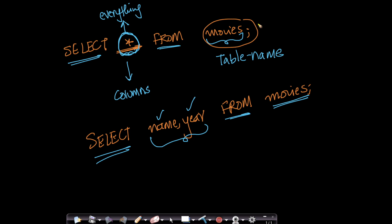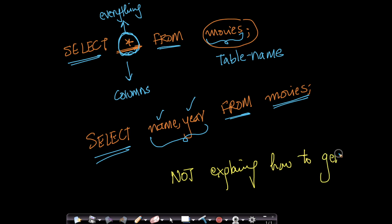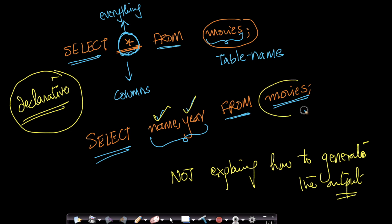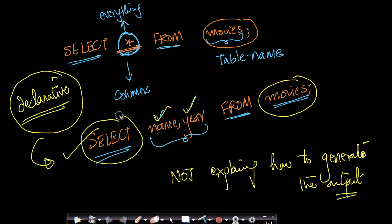One important thing to notice: we are not saying how to print it. We are not explaining how to generate the output. SQL is a declarative programming language — it's not procedural. Here you just say what you want. You're saying I want the columns name and year from this table. It is the SQL engine, the query optimizer, the parser and compiler within the database that takes care of how to do it. You only say what you want — that's why SQL is so simple.